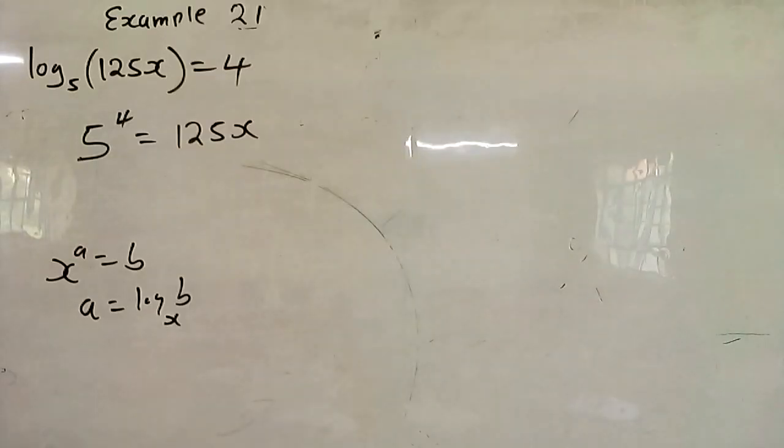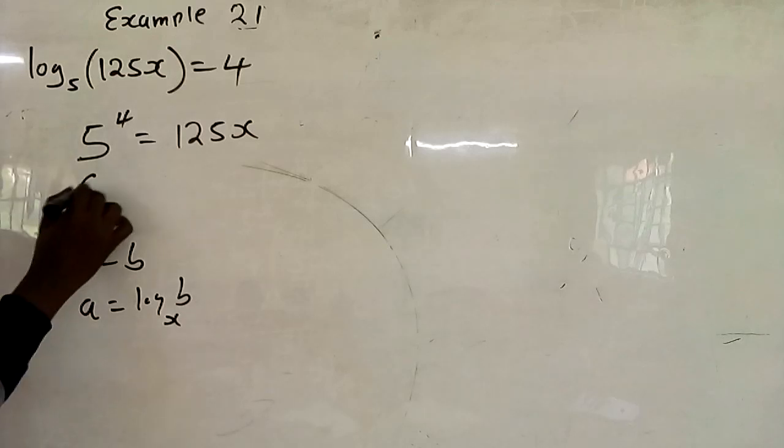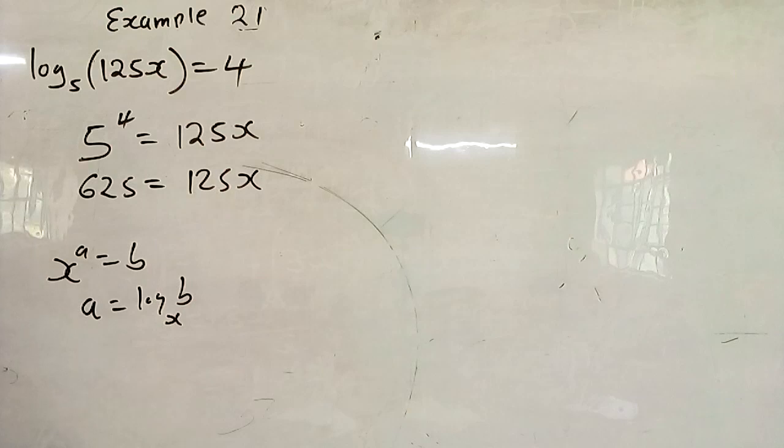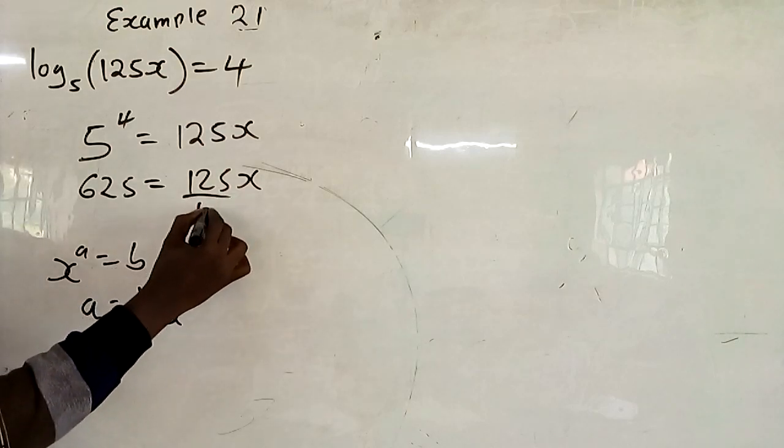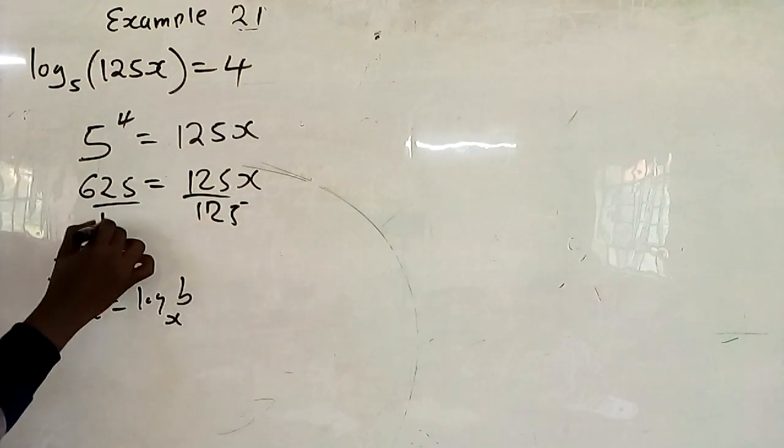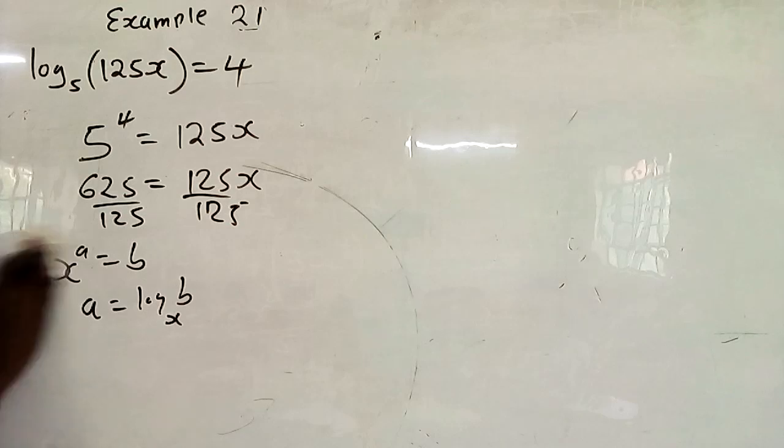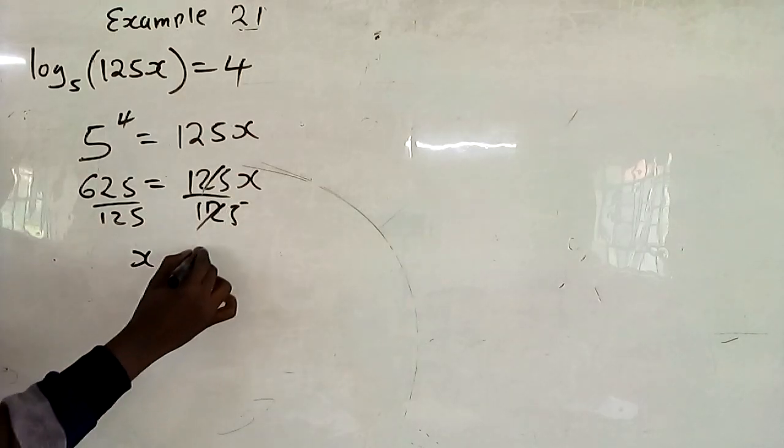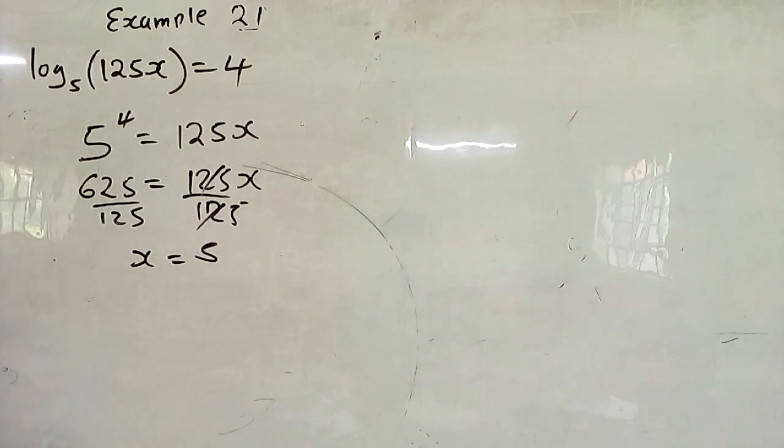Then you know 5 raised to power 4 is 625. So this one is 625 to be equals to 125x. So from there, you just divide both sides by 125 to get x. If you divide both sides by 125, you get x to be 5.